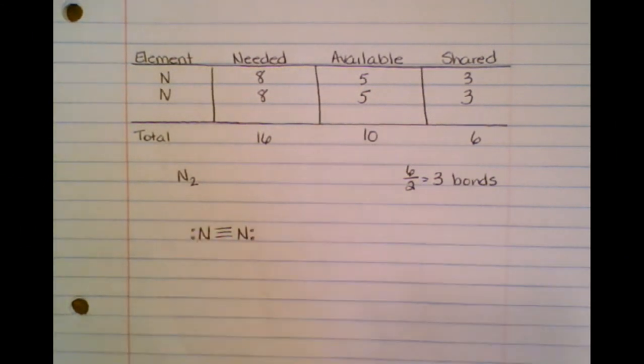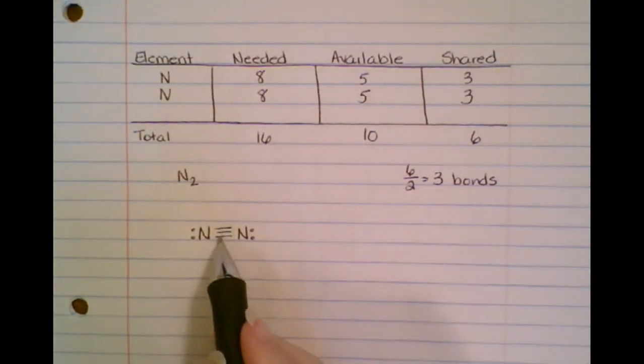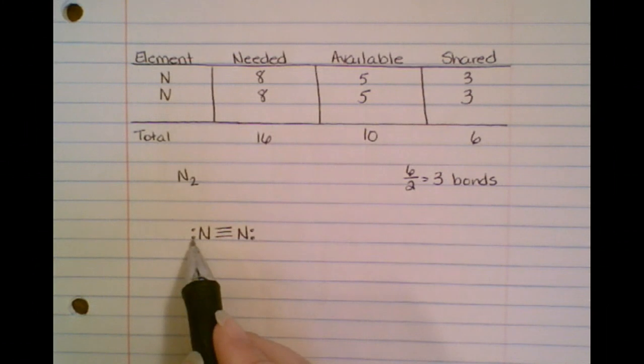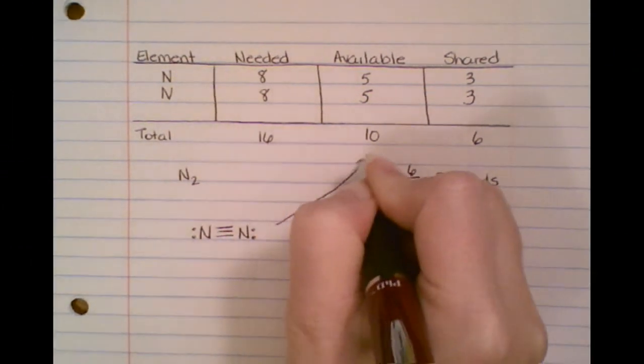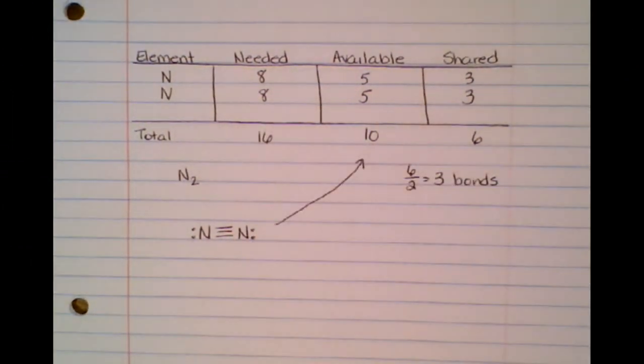So now I have two, four, six, eight; two, four, six, eight. Now how many total electrons? Well, there's two, four, six, eight, ten, which matches this ten right here. So that's how you find a Lewis structure for nitrogen.